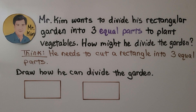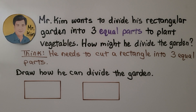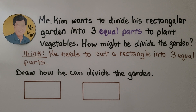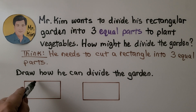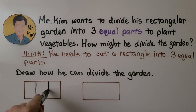Mr. Kim wants to divide his rectangular garden into three equal parts to plant vegetables. How might he divide the garden? We think he needs to cut a rectangle into three equal parts. Three equal parts means we need three parts that are the same size. He can split it like this and like this, and he'll have three equal parts.